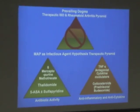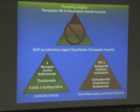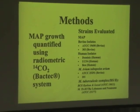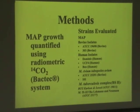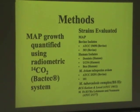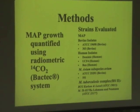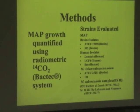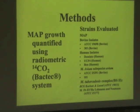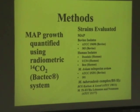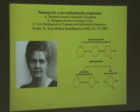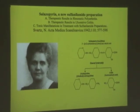So the rest of the talk will be on the inhibition studies which we subsequently did. We used the BACTEC system, and shown on the right are all of the strains that we looked at — essentially a variety of paratuberculosis, then avium, and we have two biosafety level 2 tuberculosis complexes. The story begins in 1942.